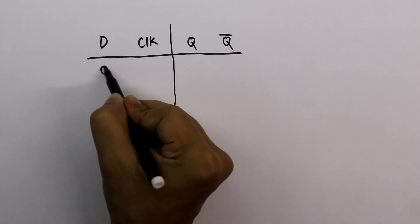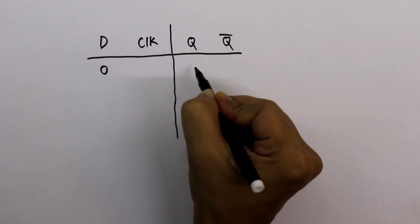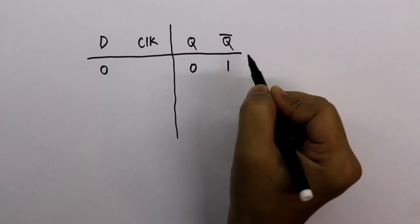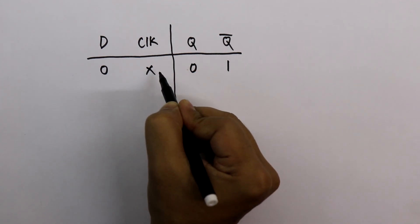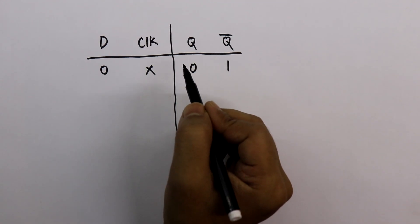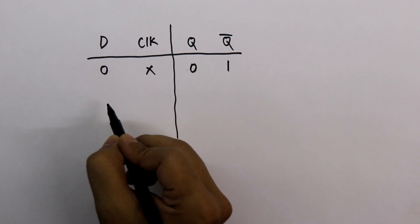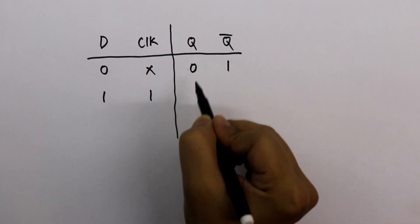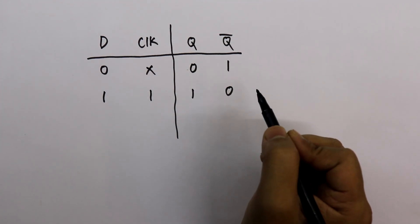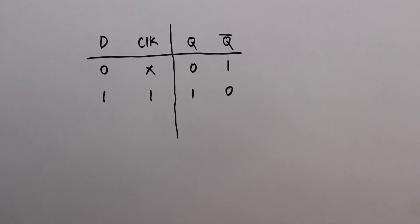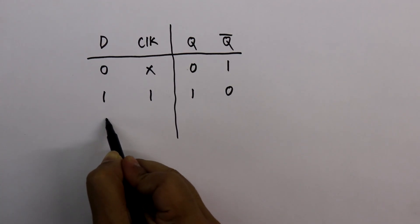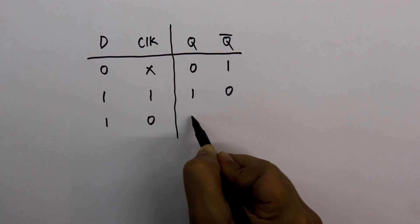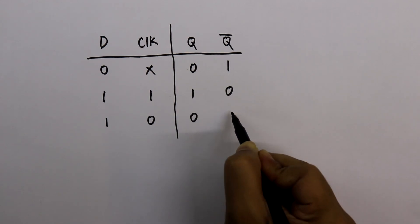If D is 0 then Q will be 0 and Q bar will be 1. It doesn't matter whether the clock is 1 or 0. If D is 1 and clock is 1, then Q will be 1 and Q bar will be 0. And if D is 1 and clock is 0, then we will get Q as 0 and Q bar as 1.